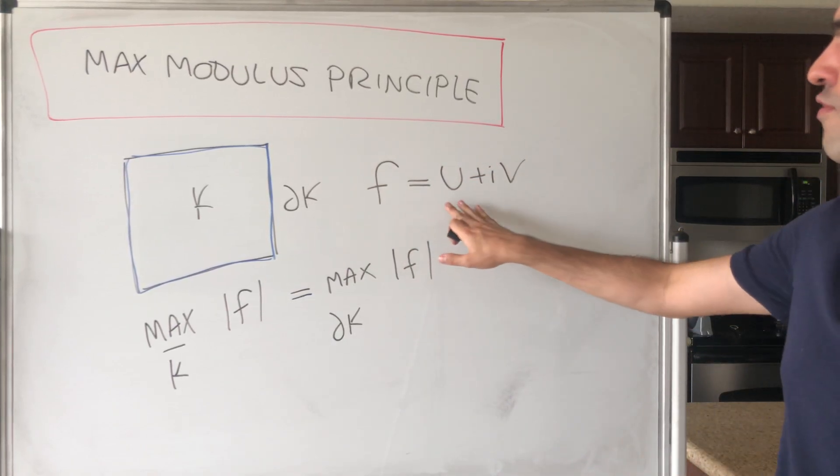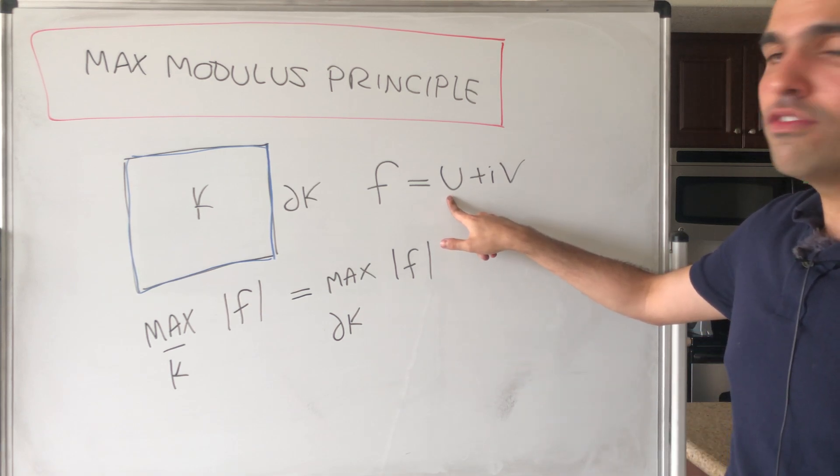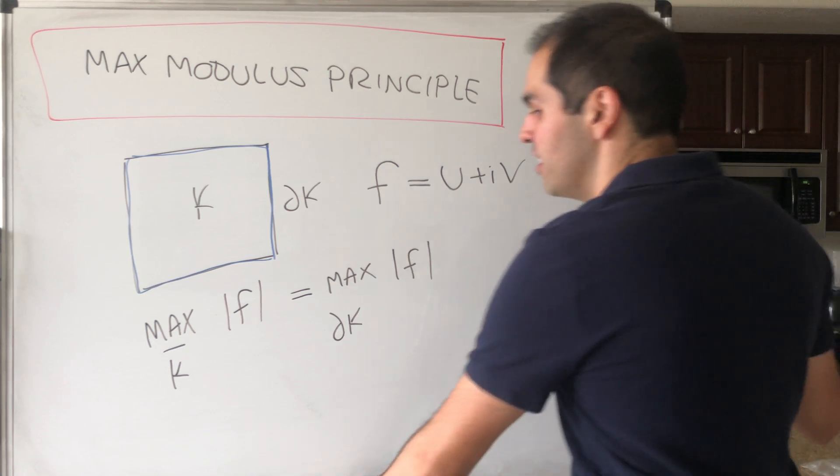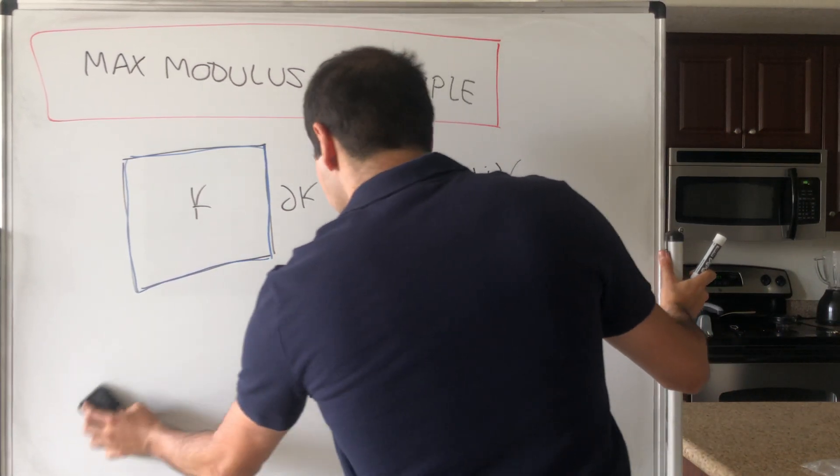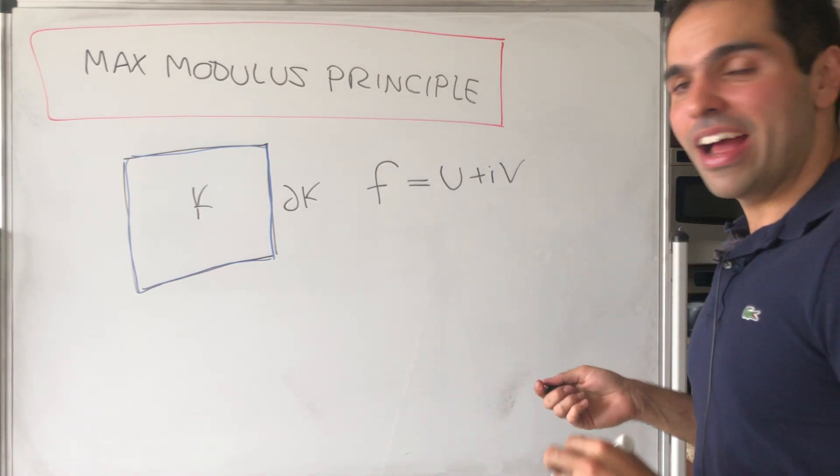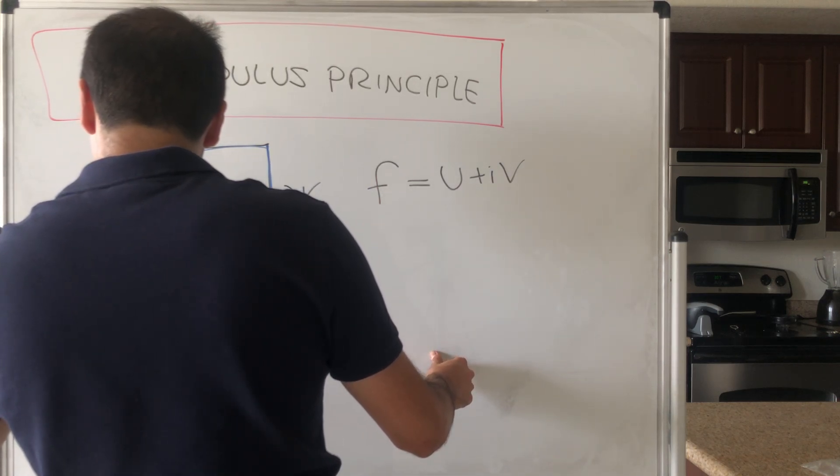So if f is of the form u plus iv, then the biggest value of the real part is on the boundary, and also the biggest value of the imaginary part is on the boundary as well. And this has to do with some very clever transform, and I want to show the following. So here's a trick.